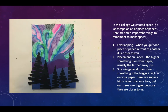In this collage we created space in a landscape on a flat piece of paper. Here are three important things to remember to make space. One: overlapping. Overlapping is when you put one piece of paper in front of another — the paper on top is closest to you. This blue mountain is furthest away because it is behind all the other pieces of paper. The black trees overlap all of the hills; they are in front.